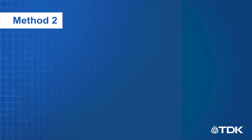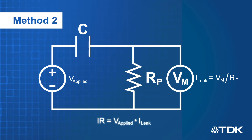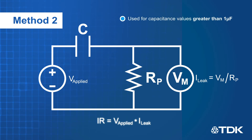The second method is to apply a voltmeter in parallel with a resistor and then connect these in series to the capacitor and voltage source. The leakage current can be calculated based on the voltage across the resistor. This method is used for capacitors with higher capacitance values, which typically have higher leakage currents that the ammeter will not be able to measure accurately due to the noise and instability of the charged capacitor.